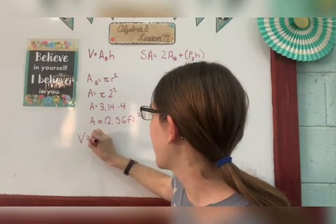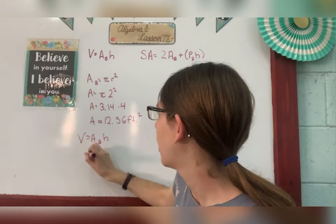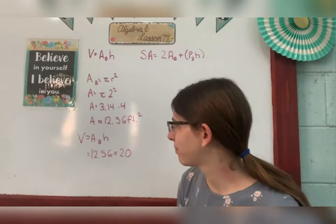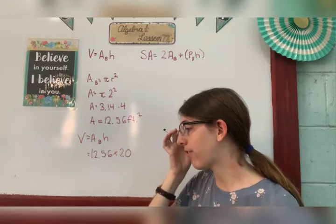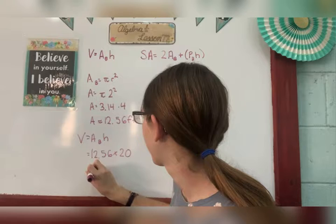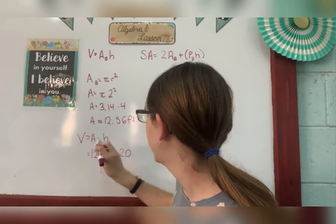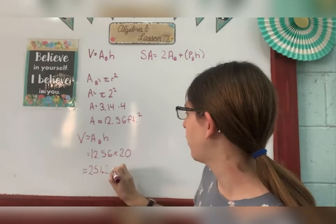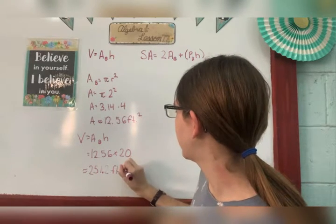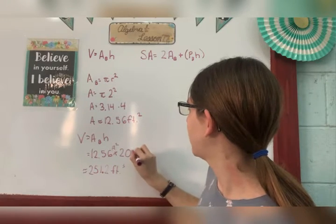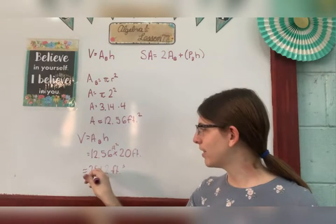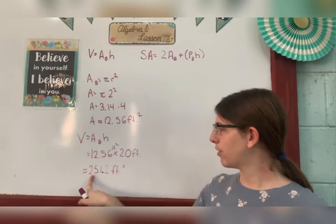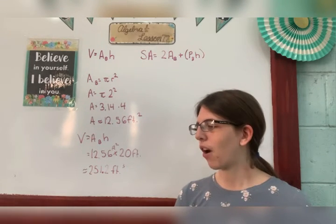So, to find the volume, I need the area of my base times the height of my object. So, that equals 12.56 times the height, which it says is 20. So, when I multiply 20 times 12.56, I'm going to get 12, 10, 11, 12, 152 points. So, I have about 251.2 feet, whoops, not squares, excuse me, volume is cubed because I have feet squared here times feet. So, I have three units of feet. So, it's feet cubed. 251.2 feet cubed would be your volume.